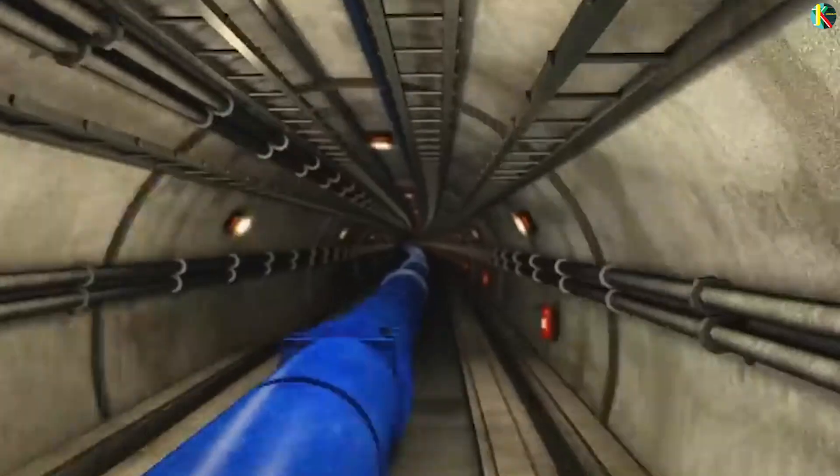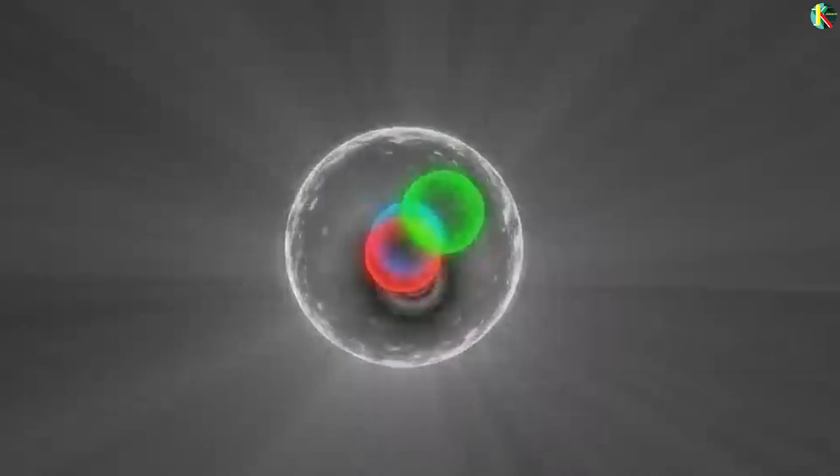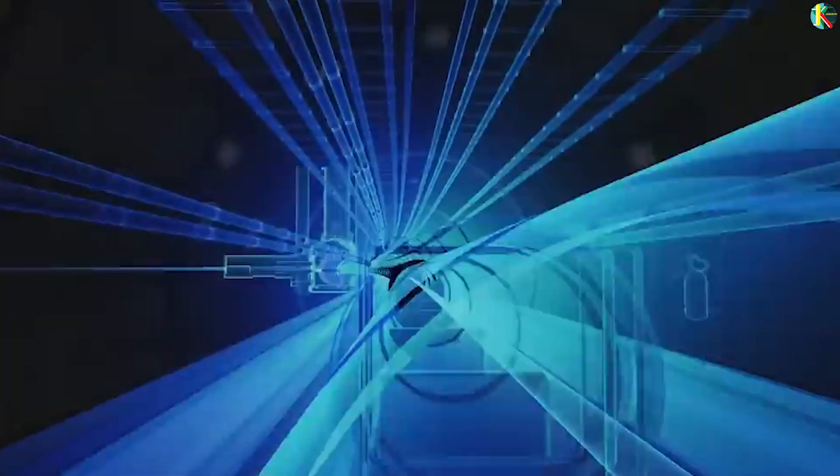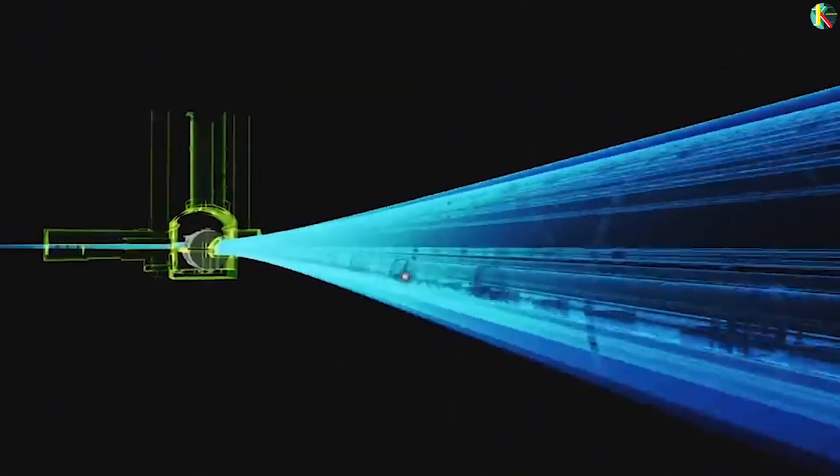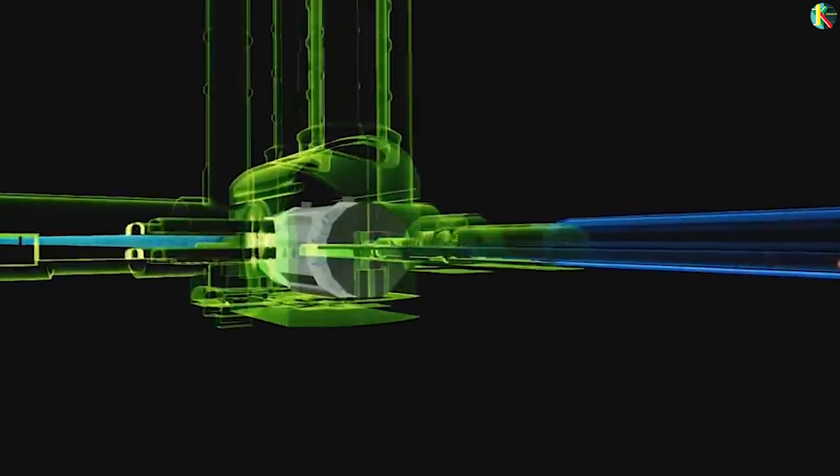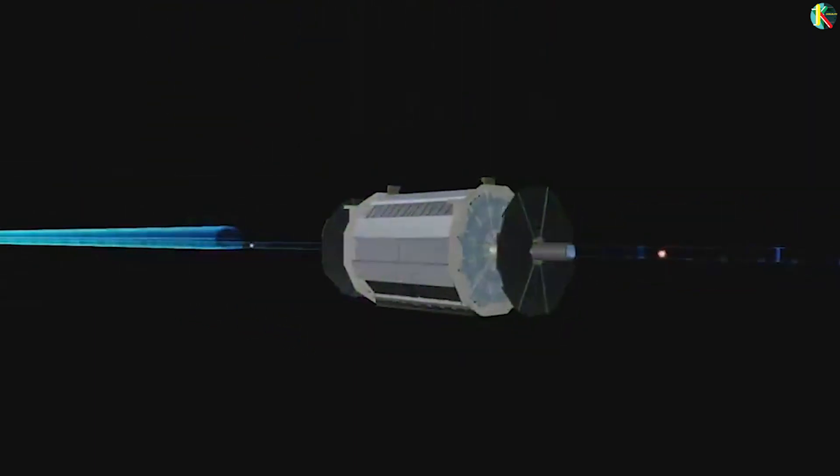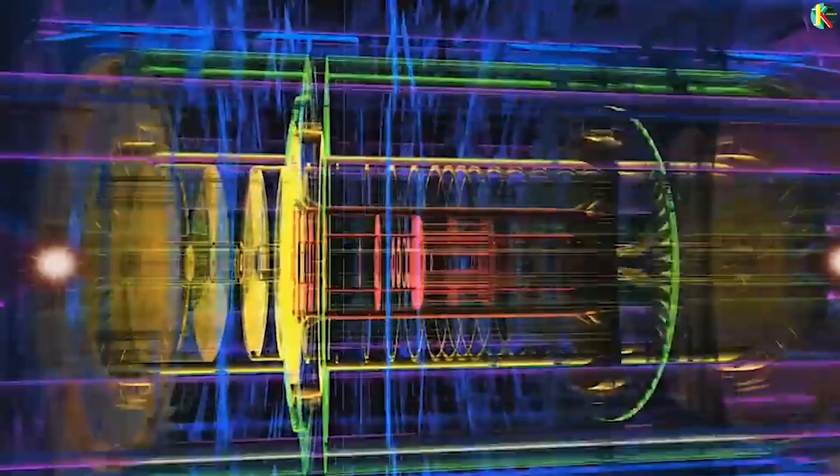Particle accelerators do only one thing, they accelerate particles. Beams of charged particles like electrons or protons are fed to them and they speed them up and focus those particles using magnetic and electric fields. This accelerated charged beam can fly through a vacuum in the accelerator at nearly the speed of light until they crash into another beam of charged particles or a fixed target. The resulting data obtained from such collision events can then help us understand more about the nature and behavior of subatomic particles.